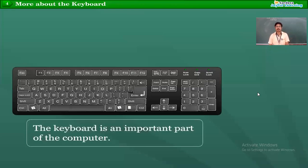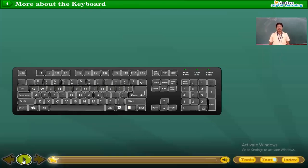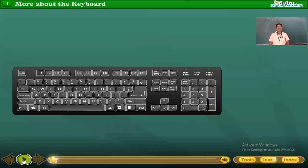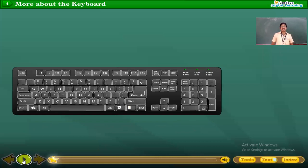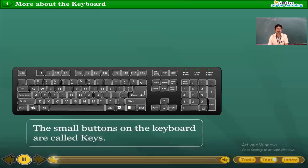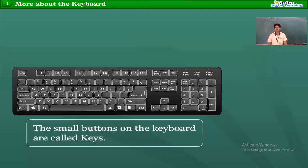The keyboard is an important part of the computer. Already in the previous chapter we saw the different parts of the computer: keyboard, mouse, monitor, CPU box, CPU, hard disk. Keyboard is a very important part of the computer to give input. On the keyboard, different types of small buttons are there, and those small buttons are called keys. In this period we see the different types of keys and their functions.